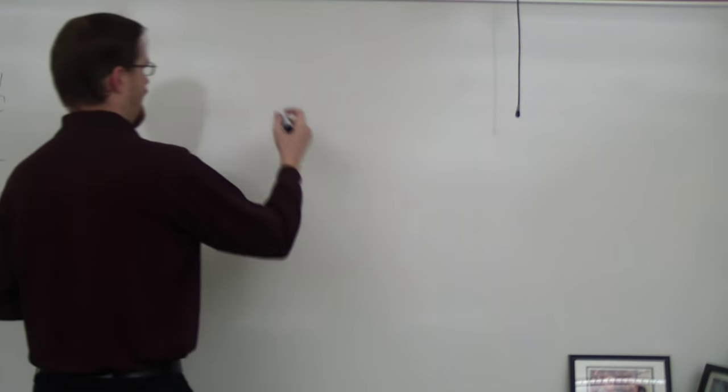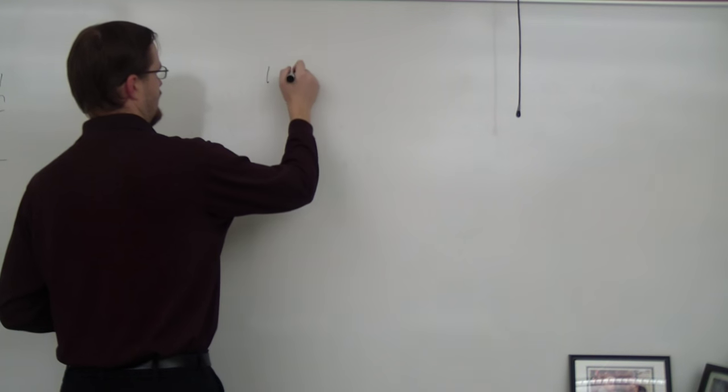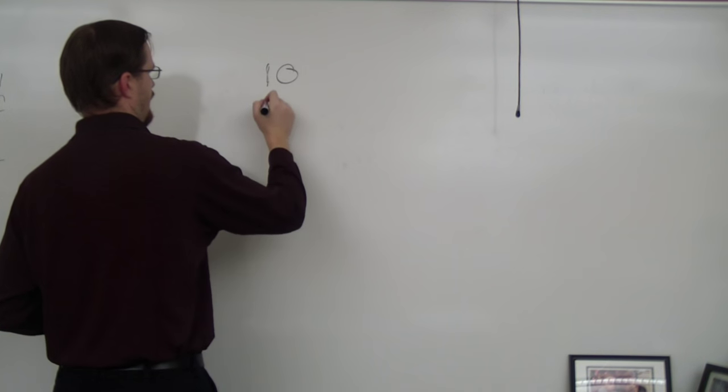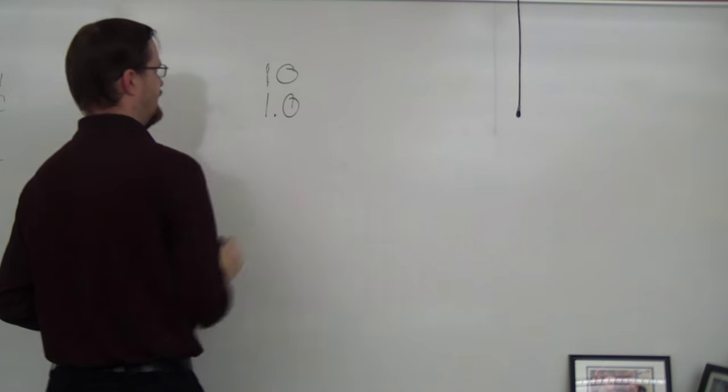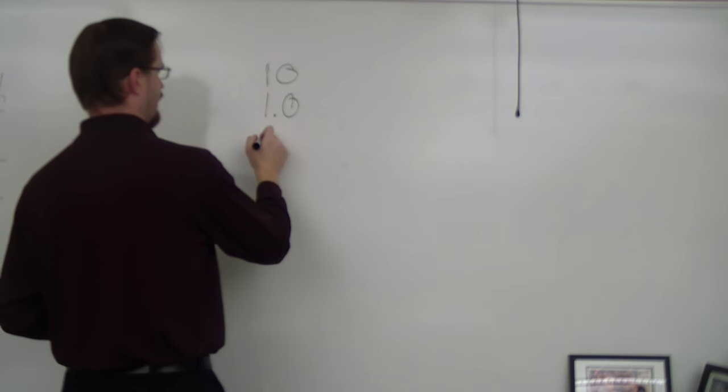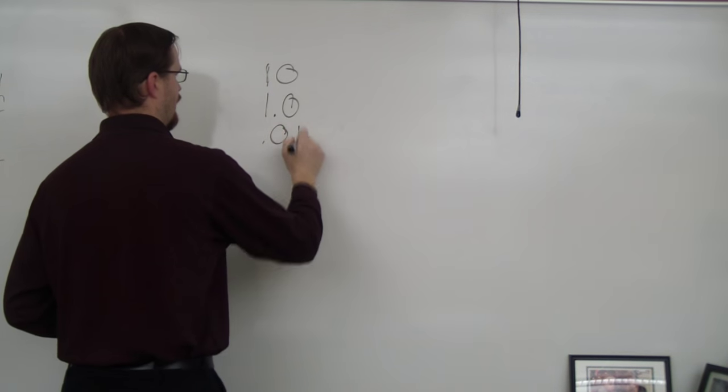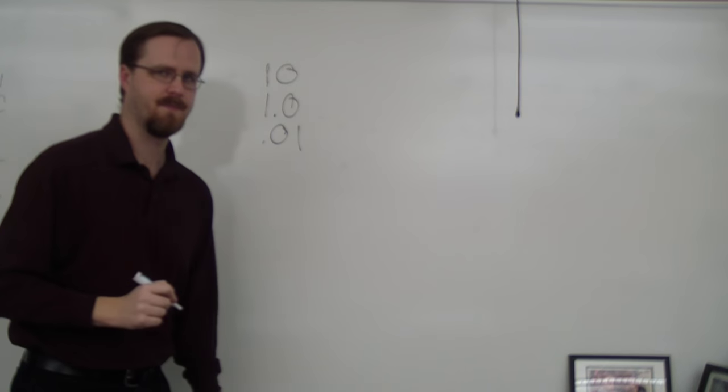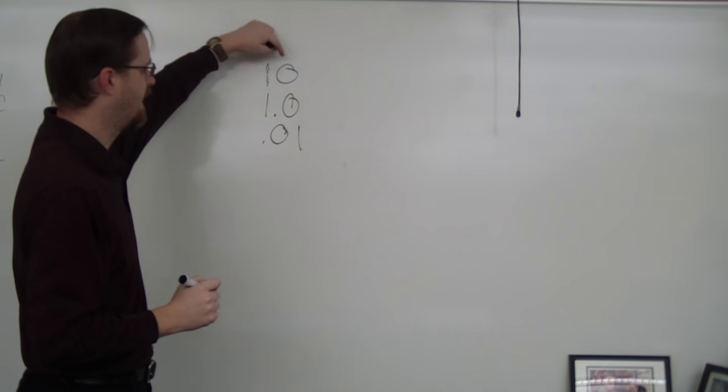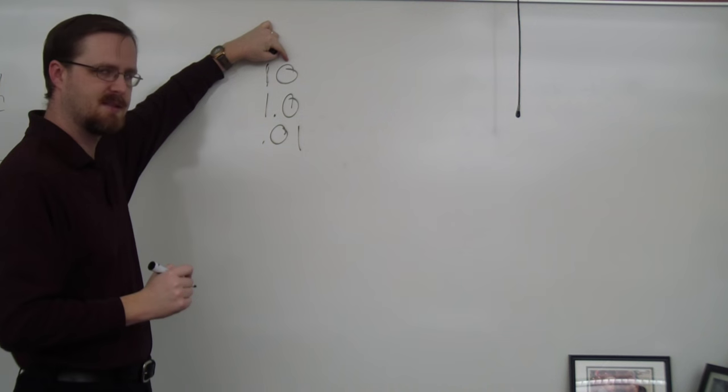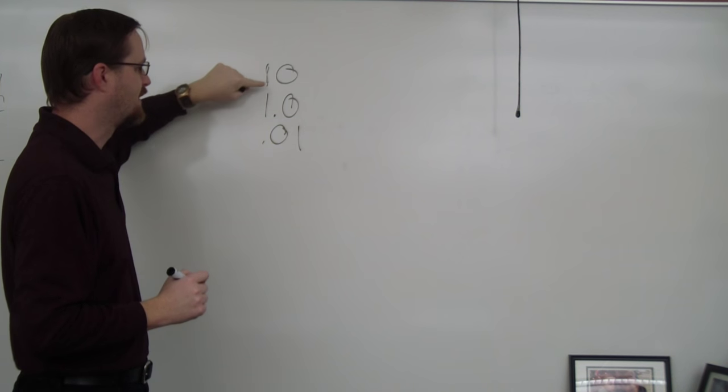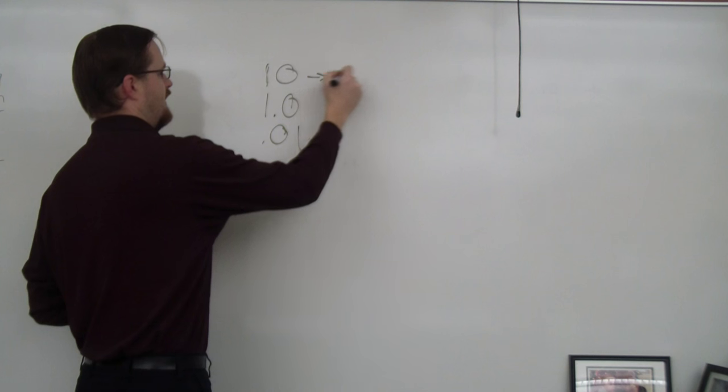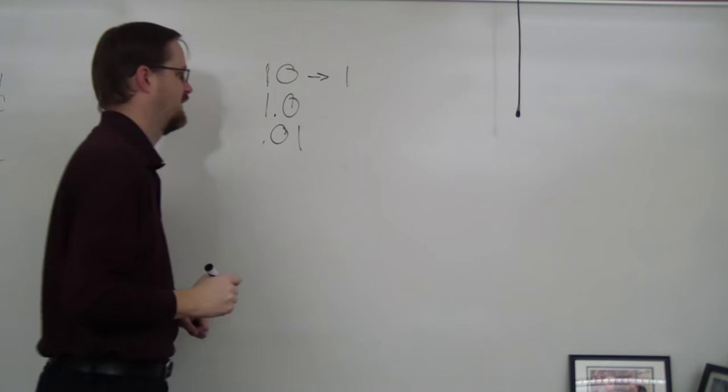So I could have the number 10, 1.0, 0.01. We have a trailing zero here, but there's no decimal. This has only one sig fig.